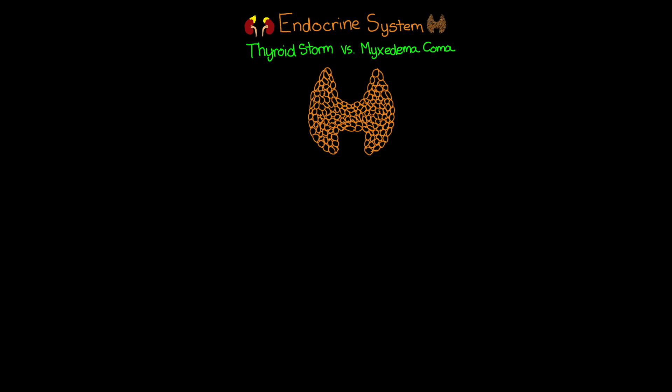Welcome back to the last lesson in the series in which we've been talking about the endocrine system, in particular these disorders which we're often going to find ourselves taking care of within the ICU. The last two disorders we're going to talk about today are the difference between thyroid storm and myxedema coma.